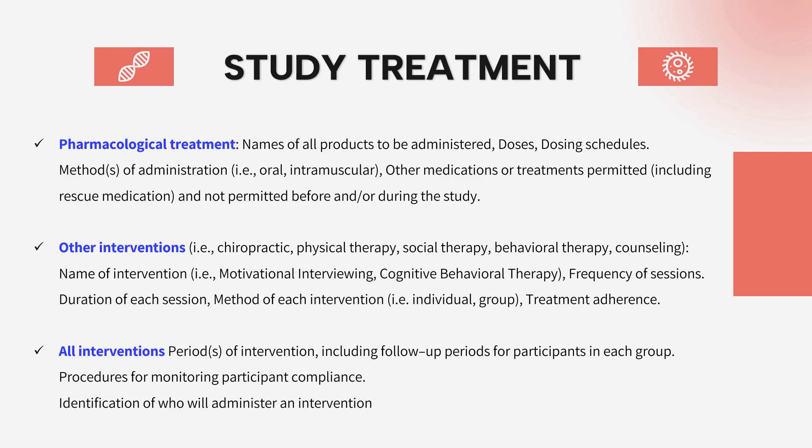The Study Treatment section will also explain any other interventions allowed alongside the primary protocol treatment — the name of the intervention, the frequency of sessions permitted, the adherence level, and the intervention level. It will describe the follow-up for subjects in each group — treatment, placebo, or comparator — how participants will be monitored, how compliance will be calculated, who is responsible for administering the intervention, and how training will be given for the study treatment.